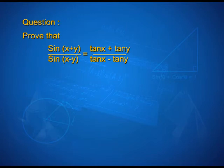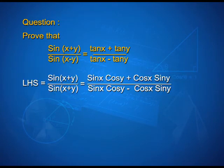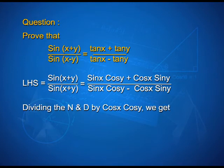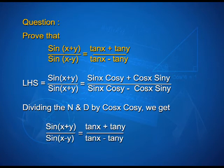We will prove that sin(x+y) / sin(x−y) = (tan x + tan y) / (tan x − tan y). Taking the LHS and using the identities, we write (sin x·cos y + cos x·sin y) / (sin x·cos y − cos x·sin y). Dividing numerator and denominator by cos x·cos y, we get sin(x+y) / sin(x−y) = (tan x + tan y) / (tan x − tan y).